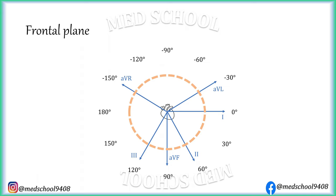Let's consider a QRS vector directed toward 30 degrees. In this case, it is not aligned to any lead axis; instead it is placed exactly between lead 1 and lead 2 axis. Hence, lead 1 and lead 2 both will show the tallest positive deflection, that is R wave. Vector is directed exactly opposite to lead AVR axis, hence it will show complete negative deflection. In this case, lead 3 axis is perpendicular to the vector, hence lead 3 will show equiphasic deflection. Lead AVL and lead AVF axis are placed within 90 degrees of QRS vector, hence they will show biphasic deflection but with R waves smaller than lead 1 and lead 2.